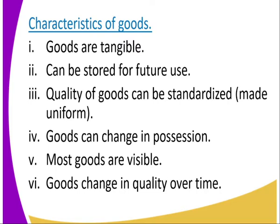Number five, goods are visible — you can see and touch them. A table, a book, a laptop, a computer — they are all visible. Number six, goods change in quality over time. For example, the computers that were used when they first started are not the ones used today. They keep on changing their quality over time.